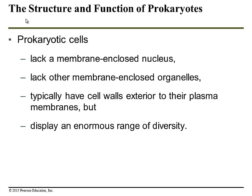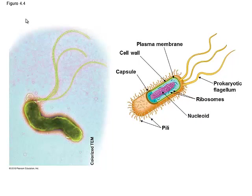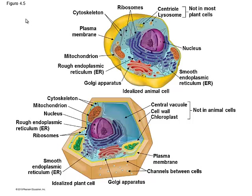Prokaryotes display an enormous range of diversity with respect to what they look like, what they can do, and where they're found. Some of them have the ability to move through aquatic environments with extracellular parts like flagella. This is an example of a simple prokaryotic organism that can move through its environment with flagella.